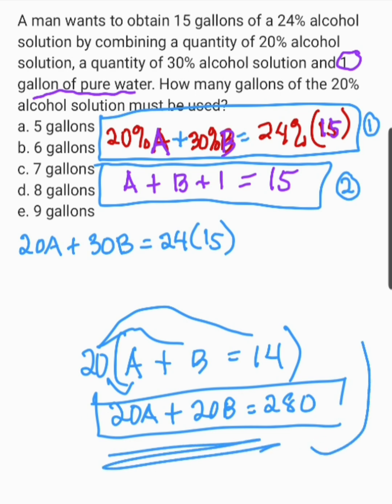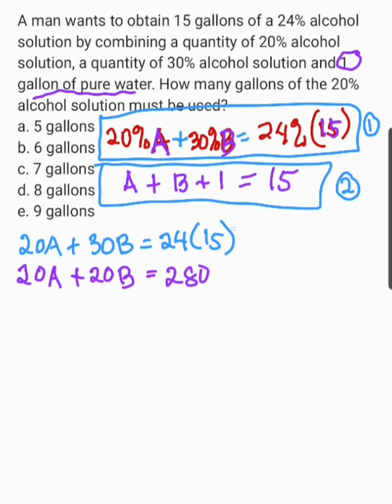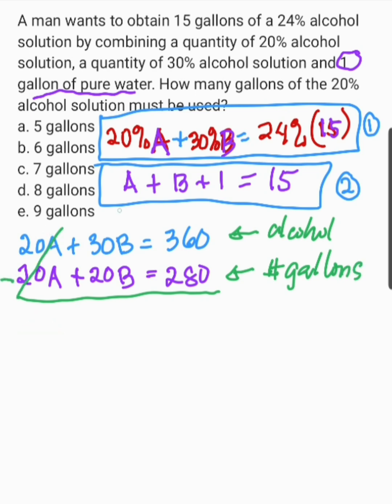So, now, ang bago natin ang equation ay 20A plus 20B equals 280. Ito ay parihong-pariho lang din yan siya dyan. So, ngayon, ang gagawin natin dito ay i-combine natin sa unang equation natin. This is 20B equals 280. By the way, bago ang lahat, itong 24 times 15, i-multiply muna natin yan and this is 360. So, i-combine na natin ito. Ito yung regarding sa alcohol solutions. Tapos, ito naman yung number of gallons. Mag-minus na tayo 20A minus 20A. Cancel out 30B minus 20B and this is 10B. 360 minus 280 and this is 80.